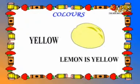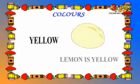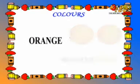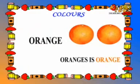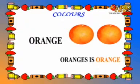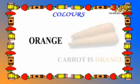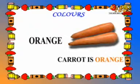Lemon is also of yellow color. Orange. Orange is also of orange color. Carrot. Carrot is of orange color.